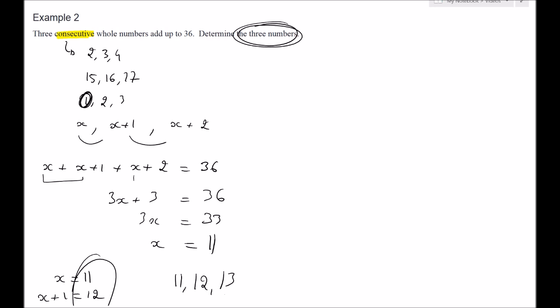There's no one way to do this. You could have also said, I'm going to say my last number is x. Then you have consecutive numbers: x, x minus 1, and x minus 2. These would have been your three consecutive numbers and also these add up to 36.